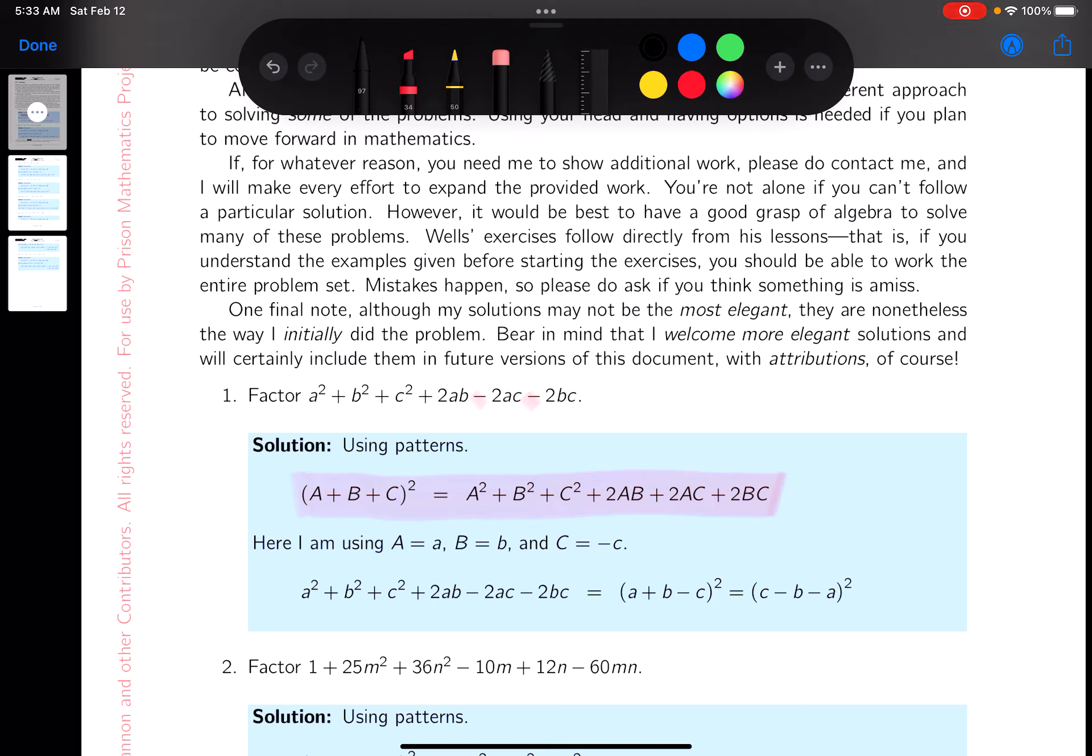So I would kind of look at it and realize that it's got to be something of this form: A plus B plus C, quantity squared.